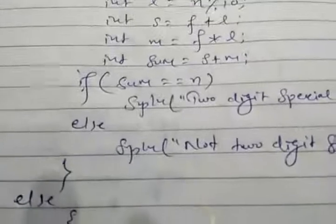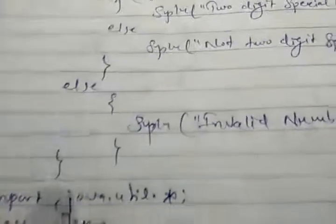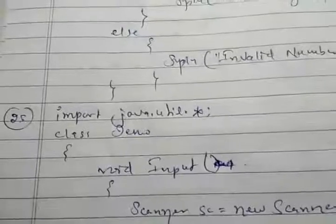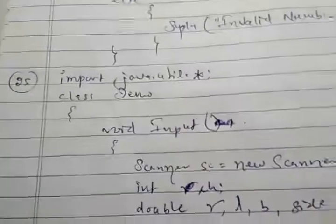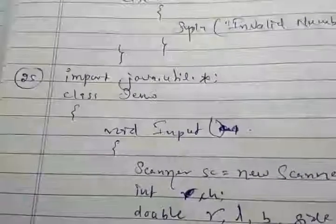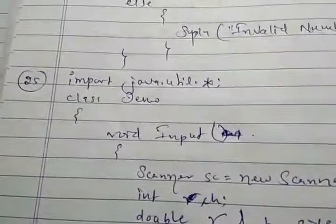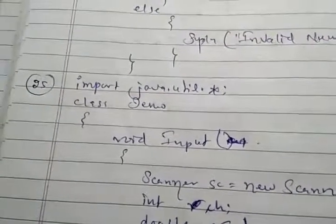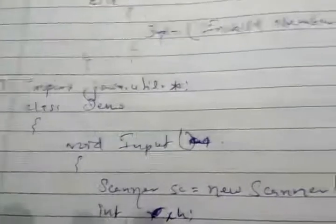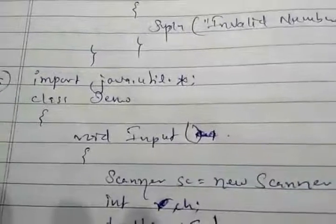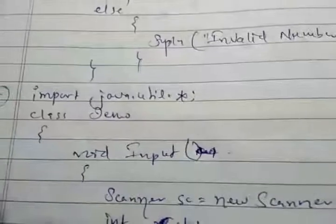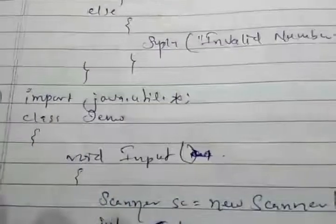Question number 25 from your book: in this program we want to find the area of a circle, the area of a rectangle, and the area of a square based on user choice. All programs in which there is a choice will be made with the help of a switch statement.